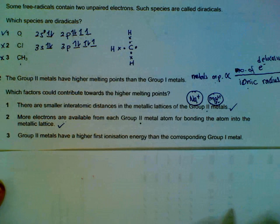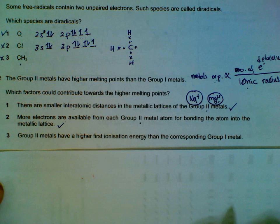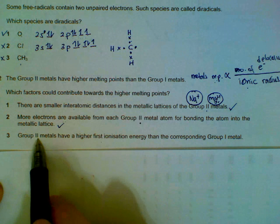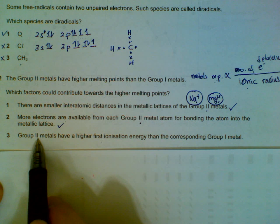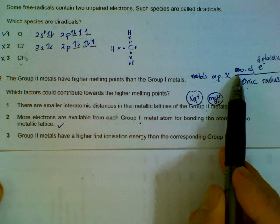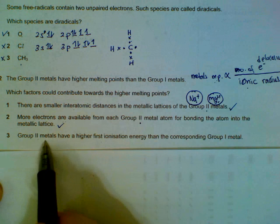Statement 3: Group 2 have higher first ionization energy. This statement is true - it is harder to remove electrons from group 2 because they have more protons which holds on to the electrons more tightly. But if they don't give up the electrons easily, it means that they are not willing to donate into the sea of electrons.